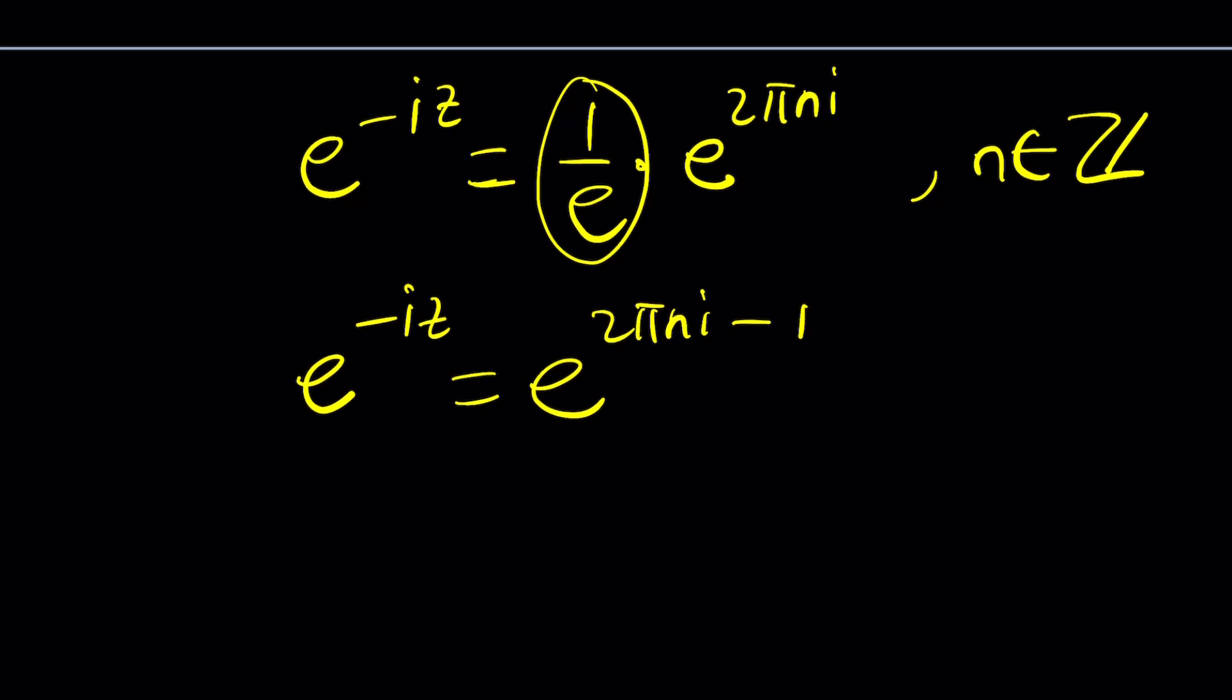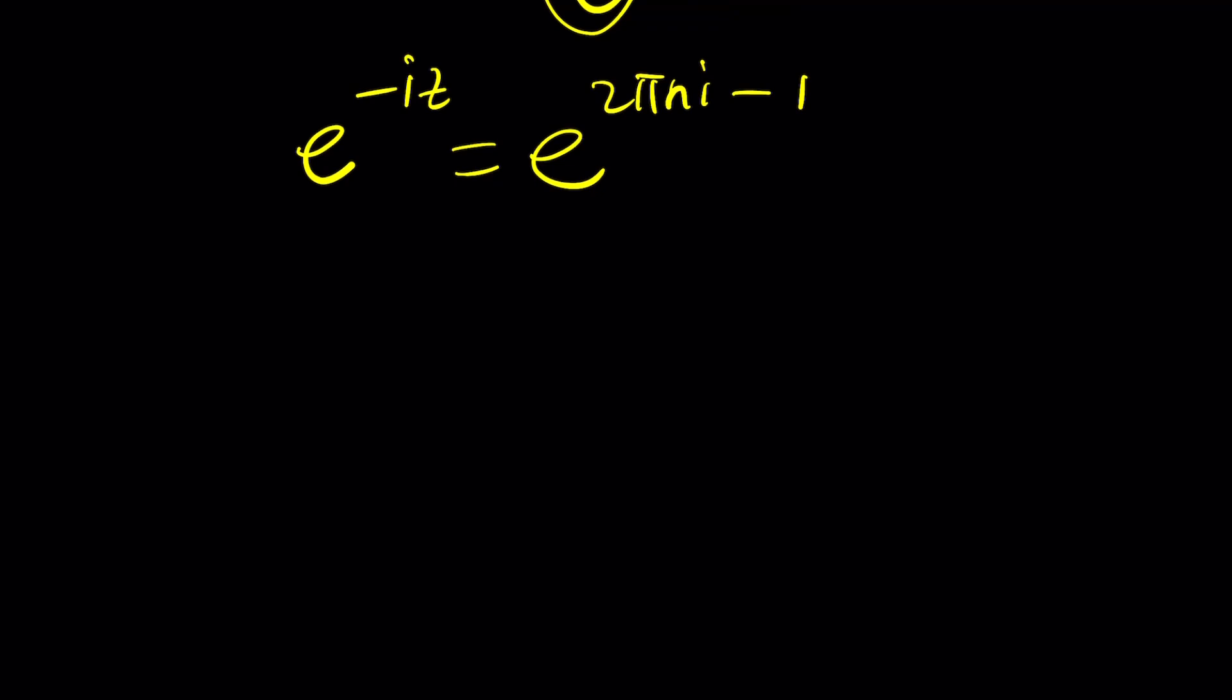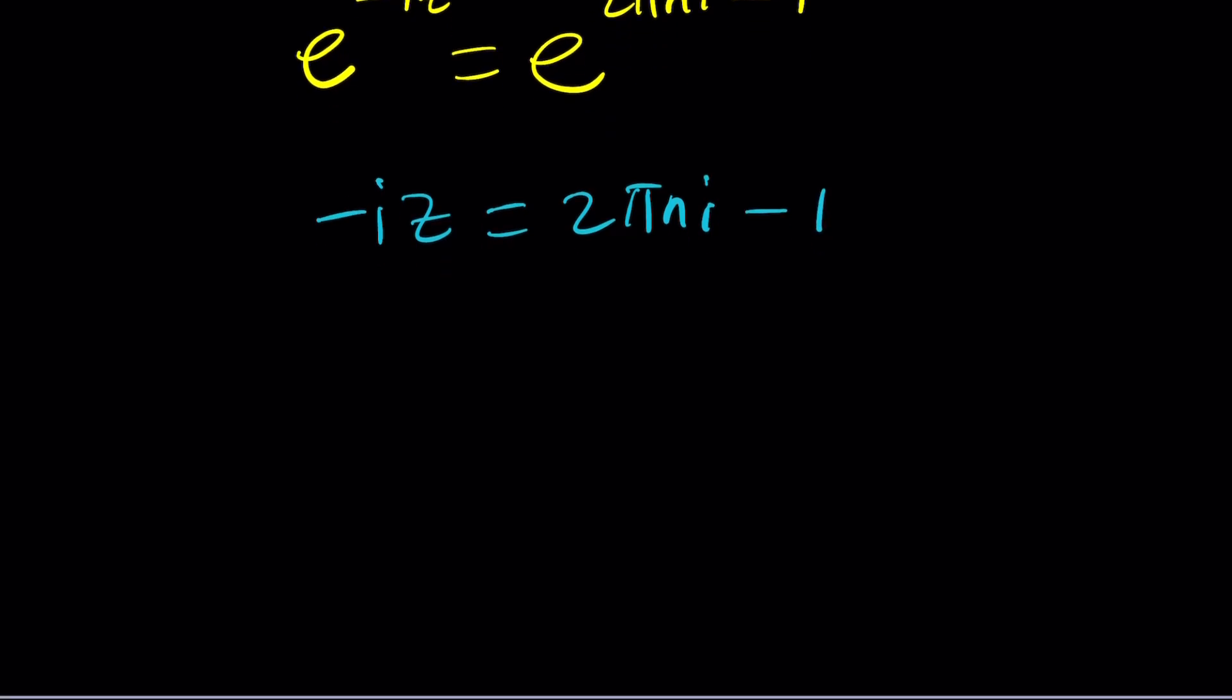So let's go ahead and solve for z and then we'll check our work. Negative i z equals 2 pi n i minus 1. Remember, n is an integer. And now we're going to divide both sides by negative i. But guess what? You could also multiply by negative i. It's the same thing, pretty much. Multiply by negative i. Multiply by negative i. When you multiply, actually I should say not multiply by negative i, but multiply by positive i. So we're going to multiply by i, not negative i. Let's do it. Multiply by i and multiply by i.